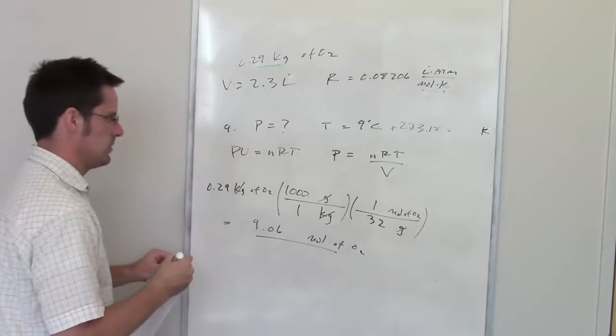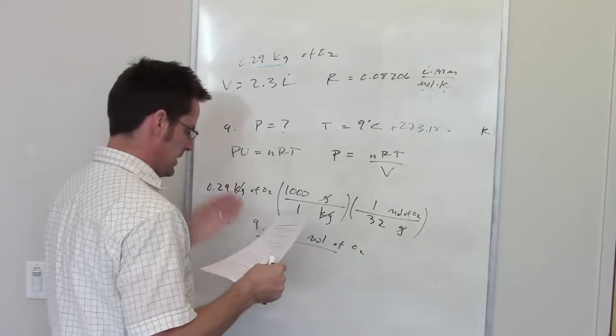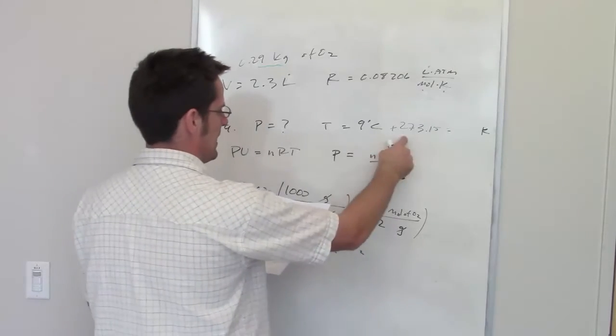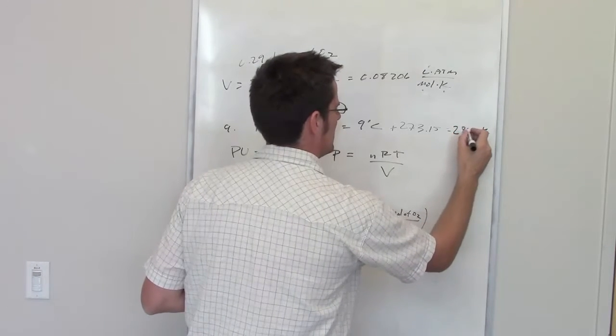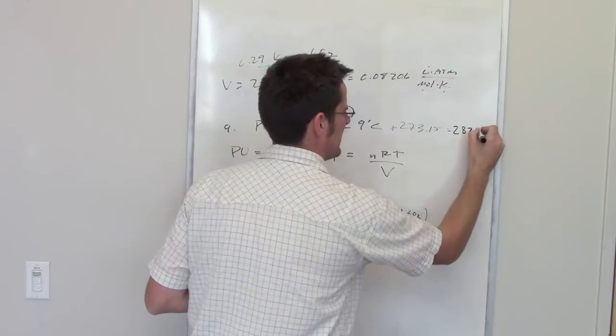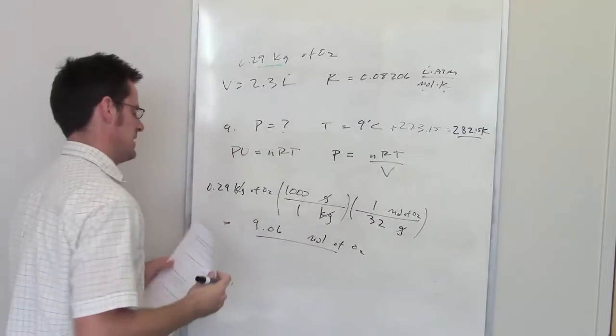All right, now I've got moles. Separately, then, I also need to determine the temperature. So I take 9 degrees, add it to 273.15, and that should be 282.15 kelvins. Wow, I did not leave myself very much room.